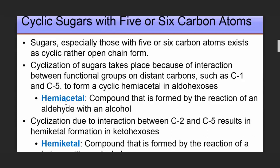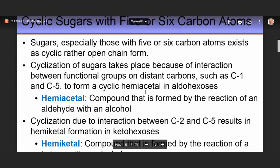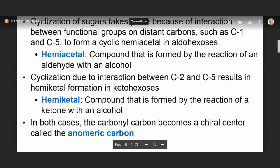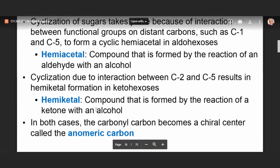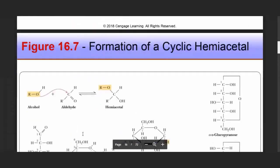Cyclic sugars with five- or six-membered rings: sugars, especially those with five or six carbon atoms, exist as cyclic rather than open-chain forms. Cyclization occurs because of interaction between functional groups at distant carbons, such as carbon 1 and carbon 5, to form a cyclic hemiacetal in aldohexoses. A hemiacetal is a compound formed by the reaction of an aldehyde with an alcohol. When cyclization occurs due to interaction between carbon 2 and carbon 5, a hemiketal forms in ketoses — a hemiketal is formed by the reaction of a ketone with an alcohol. In both cases, the carbonyl carbon becomes a new chiral center called the anomeric carbon.